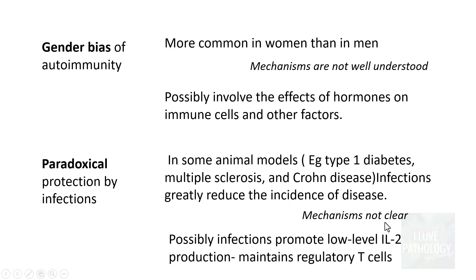The mechanism of this paradoxical protection is not fully known, but a possible explanation is that infections promote low-level interleukin-2 production, which helps in the maintenance of regulatory T cells. Regulatory T cells are a very important component of peripheral tolerance, and that is why infections may provide protection from autoimmune diseases.